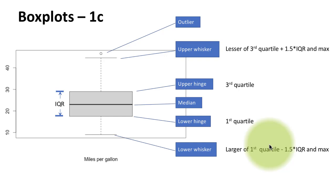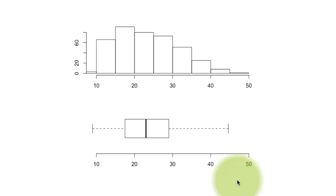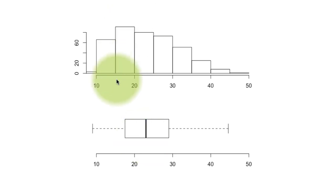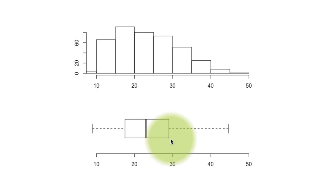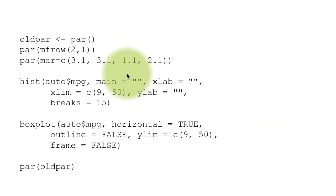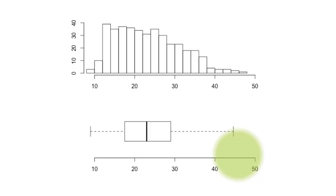Since histograms and box plots both represent the distribution of a numeric variable, it is sometimes useful to look at both of them together. Here I've shown a histogram on top and a horizontal box plot at the bottom for the same data. The boxplot highlights the distribution by quartile, and the histogram highlights the distribution by binning the values. The code used to generate these charts also allows you to change the number of bins on the histogram.